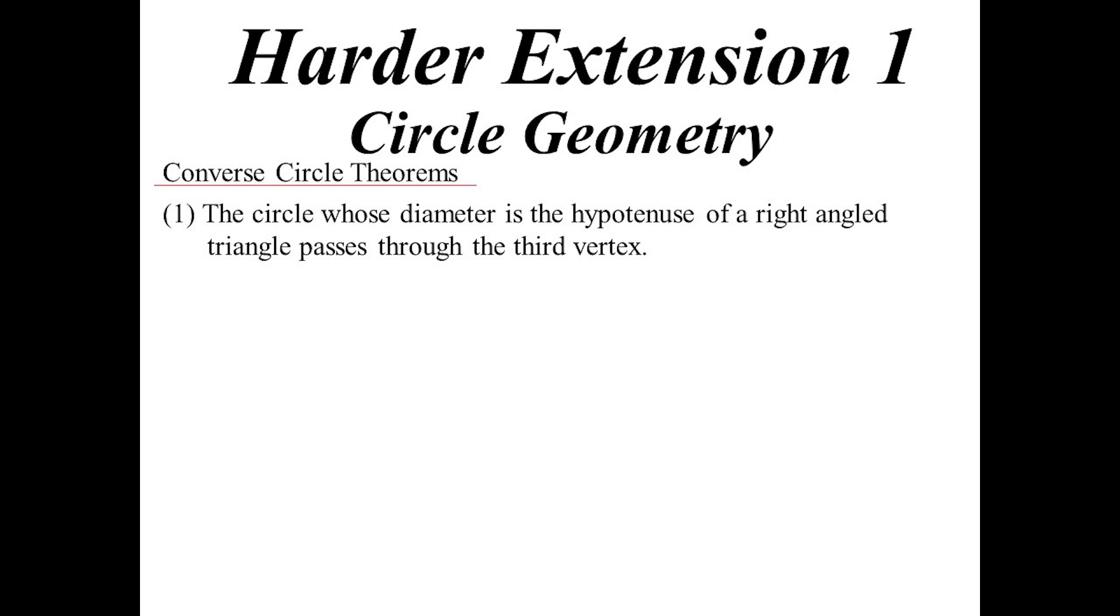The circle whose diameter is the hypotenuse of a right-angle triangle passes through the third vertex. If you can create a right-angle triangle, then you must be able to create a circle that goes around those points. If it's a right-angle triangle, you know AB would be the diameter because of angle in a semicircle.